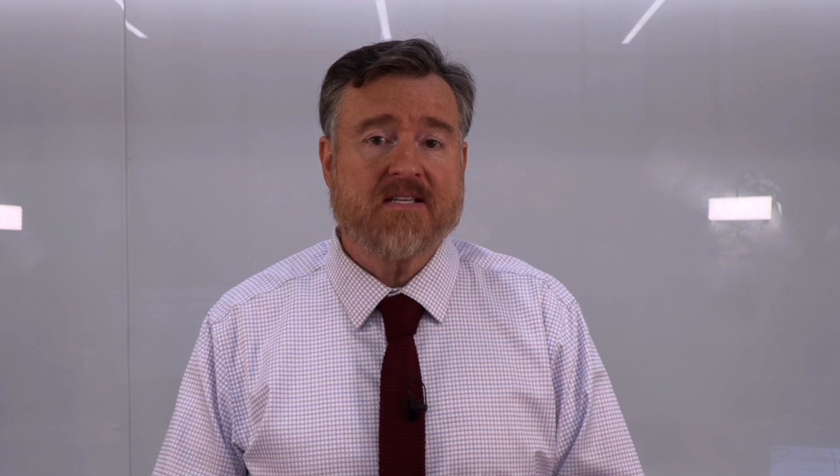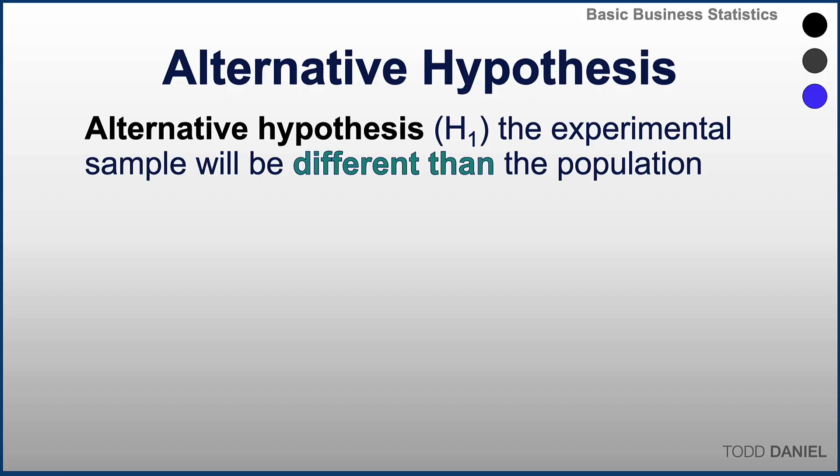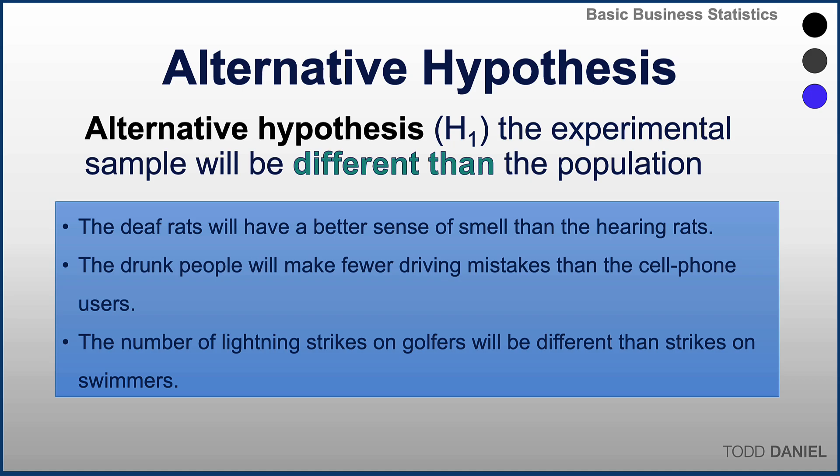Our null hypothesis is our testing hypothesis — that is what we're going to be examining with our statistical test. But we will also specify an alternative hypothesis: the hypothesis that we would accept if we can demonstrate that the null hypothesis is most likely false. An alternative hypothesis is that the experimental sample will be different than the population.